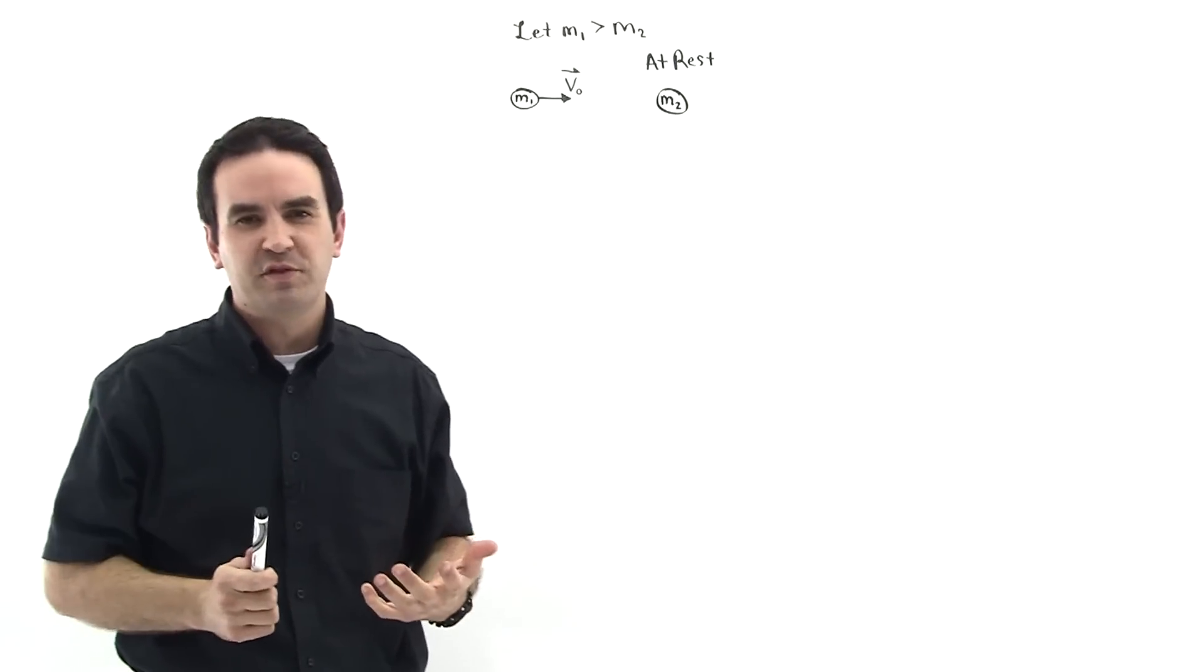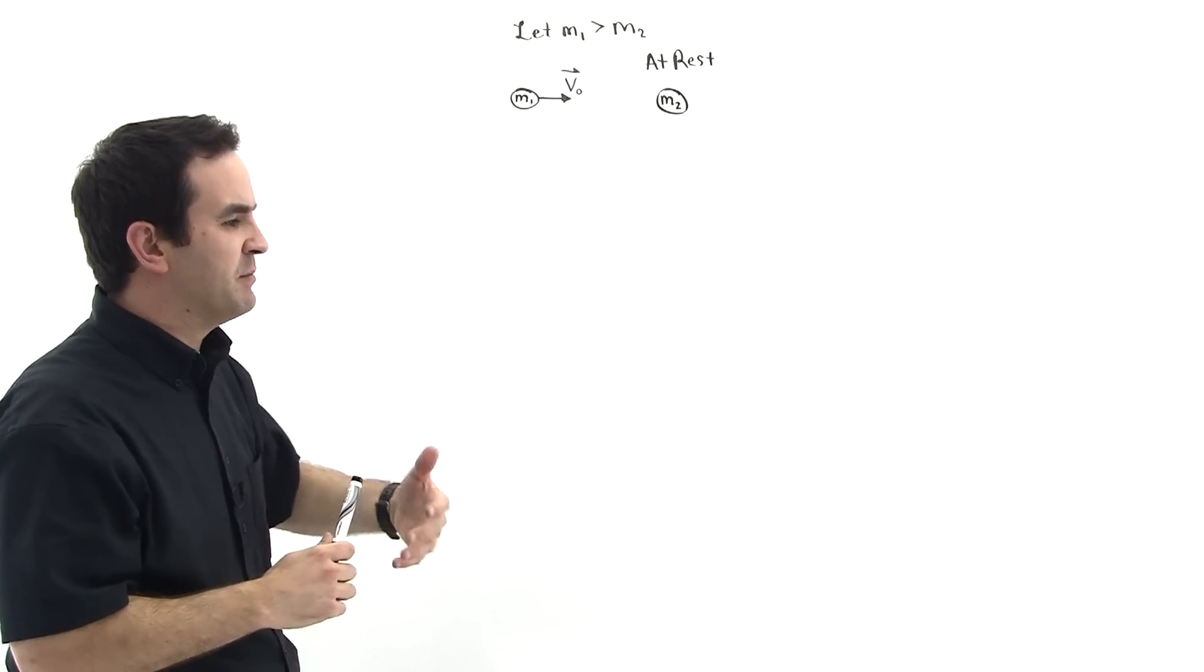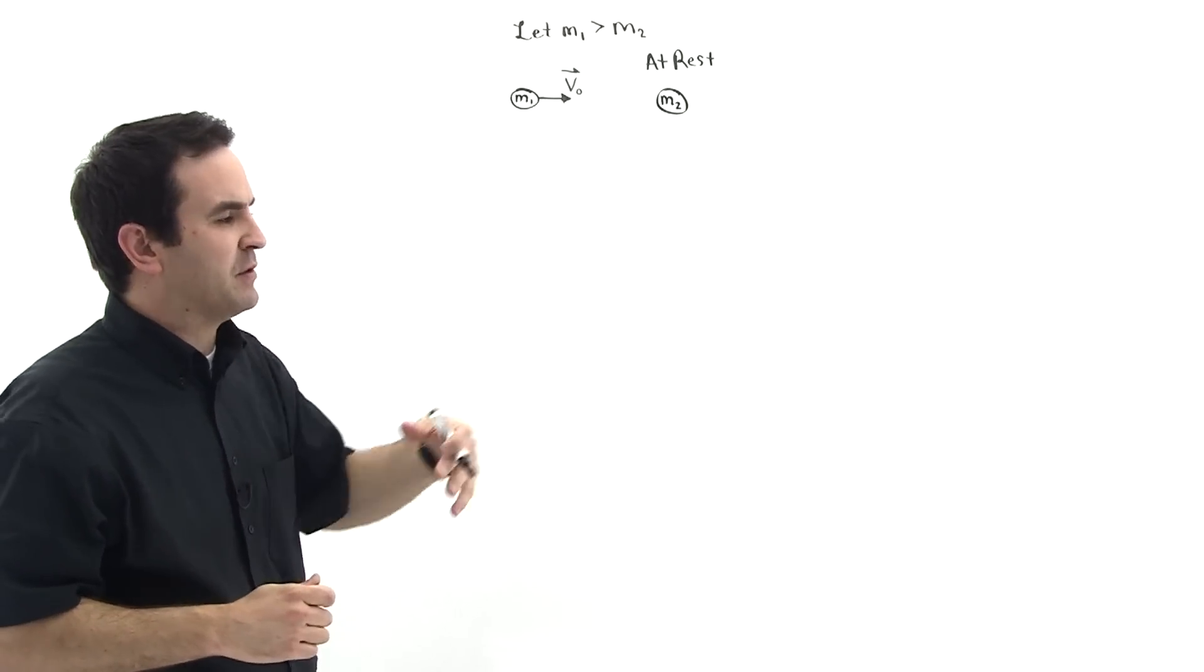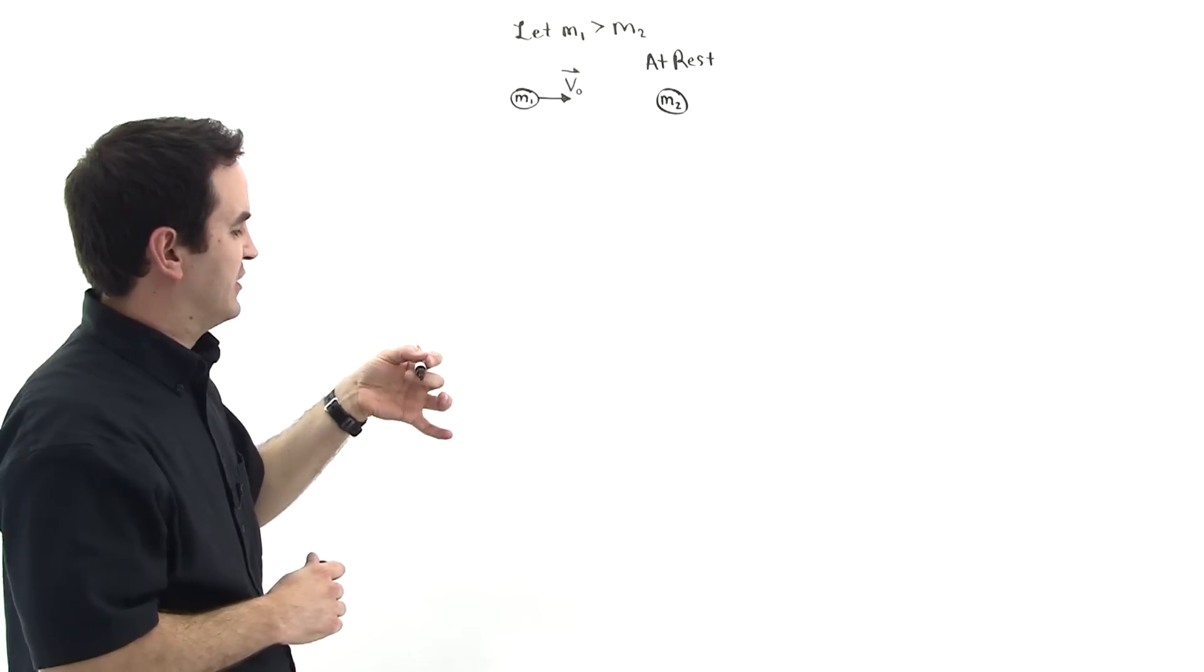So let's apply impulse and momentum. But we've got two particles here, so we need to apply the sum of the momentum, the initial momentum, and then add the impulse term, and that will be equal to the sum of the final momentum of each of the particles afterwards.